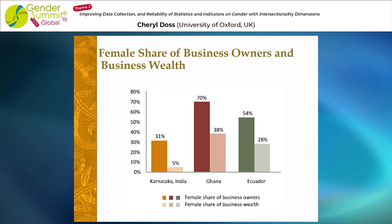It's useful to think about the share of owners and the share of wealth together. We didn't see big differences for principal residence, but particularly for Ghana — and actually for all three countries — we see a big difference for businesses. In Ghana, 70% of the business owners are women, but only 38% of the business wealth is owned by women. What that tells us, particularly in Ghana but across all of them, is that where women are business owners, their businesses are much less valuable than those owned by men.